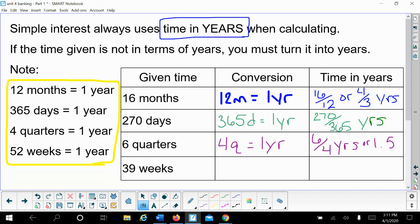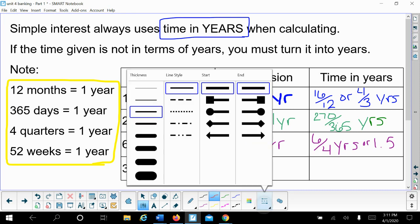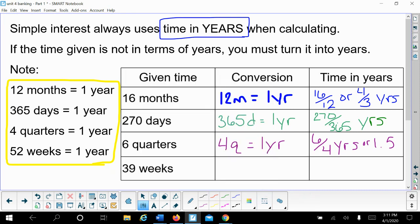And then 39 weeks - I'm going to use the fact that there are 52 weeks in one year. So if I have 39 weeks out of the 52 in a year, again you can keep it as 39 over 52 years, or you could say this one is not a repeating decimal - this is 0.75 of a year, so you could use 0.75 for that one.